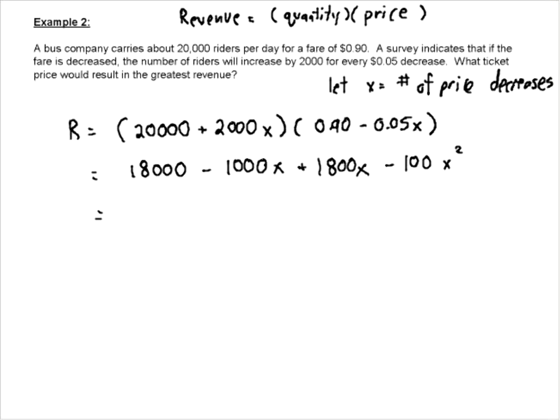So now I'm just going to take this and rearrange and put my quadratic in the front. So we're going to get -100x² plus 800x plus 18,000.